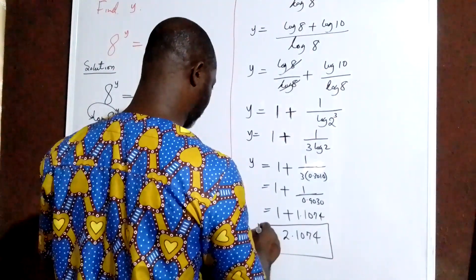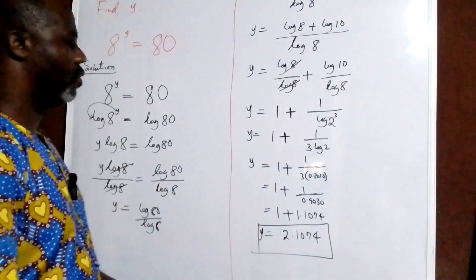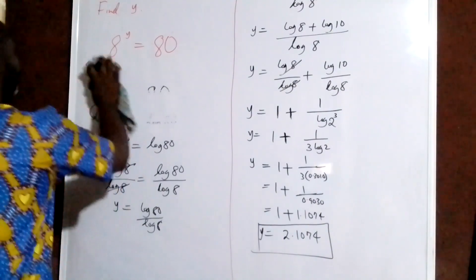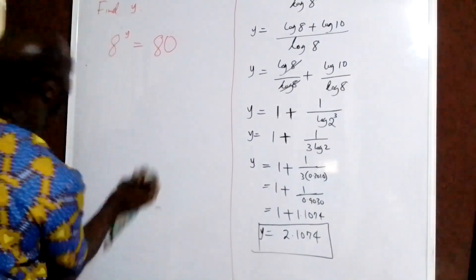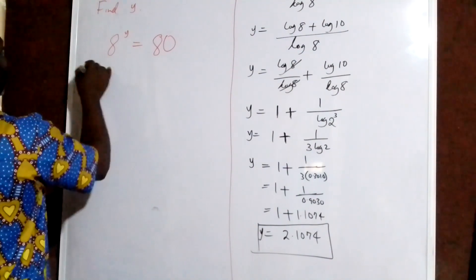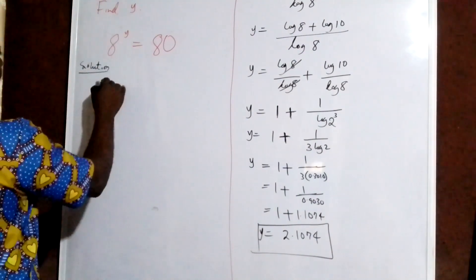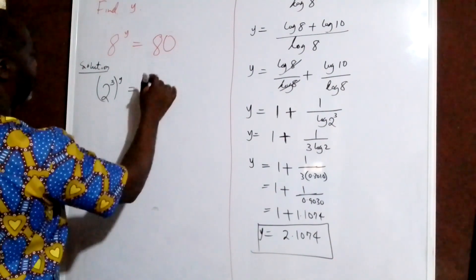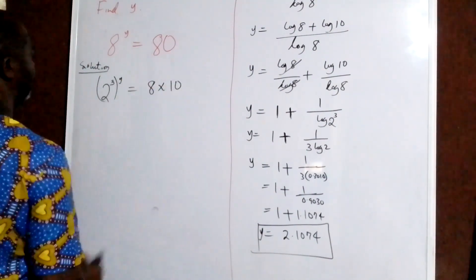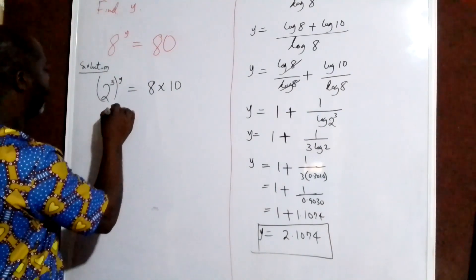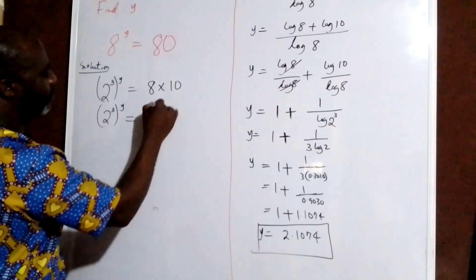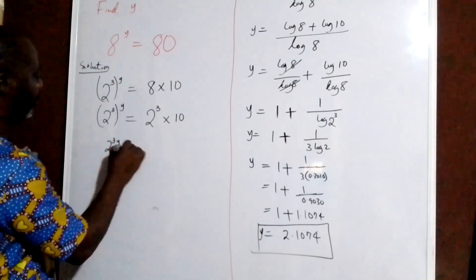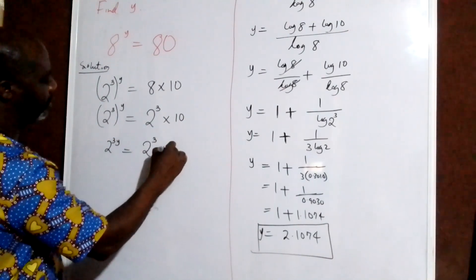So here is the second method I am going to use. What I am going to do is say we are going to have 2 to the power of 3, to the power of y, equal to 8 times 10. And then I have 2 to the power of 3 to the power of y equals to 2 to the power of 3 times 10. So this will give me 2 to the power of 3y equals to 2 to the power of 3 times 10.